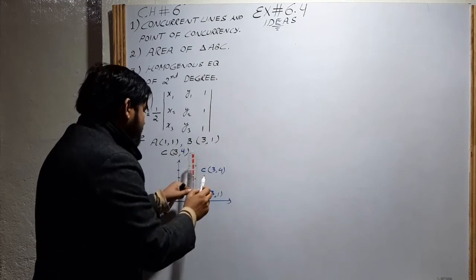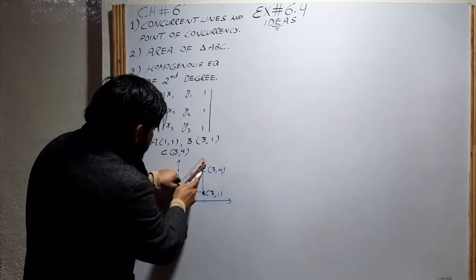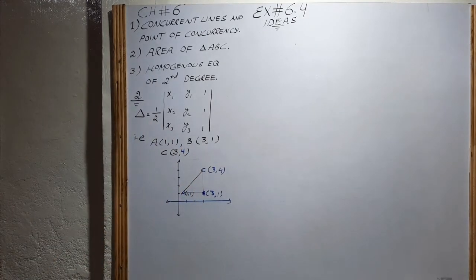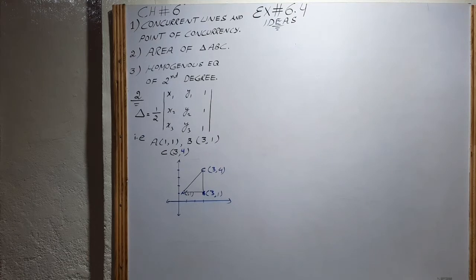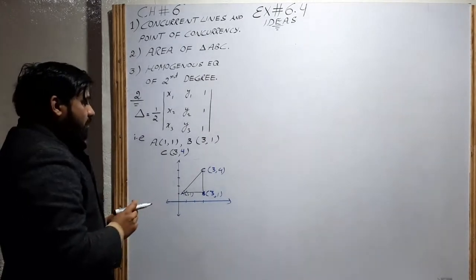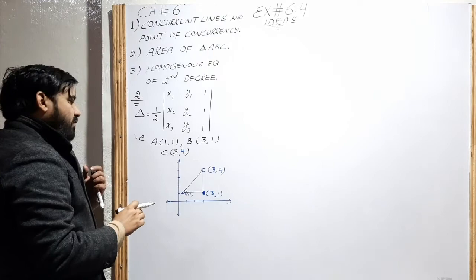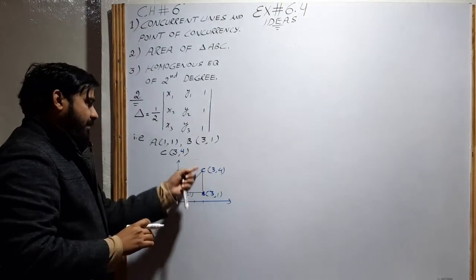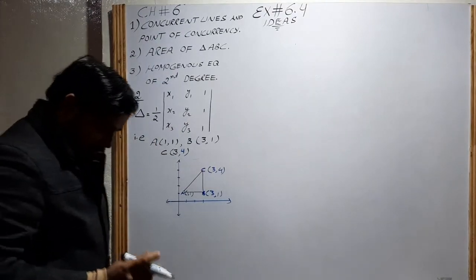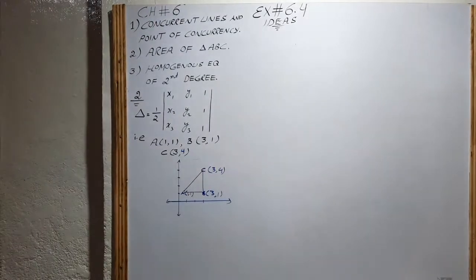Join A and B, B and C, and A and C. This looks like a right angle triangle. We can find the area by using this formula and also another formula: 1/2 base multiply by height.